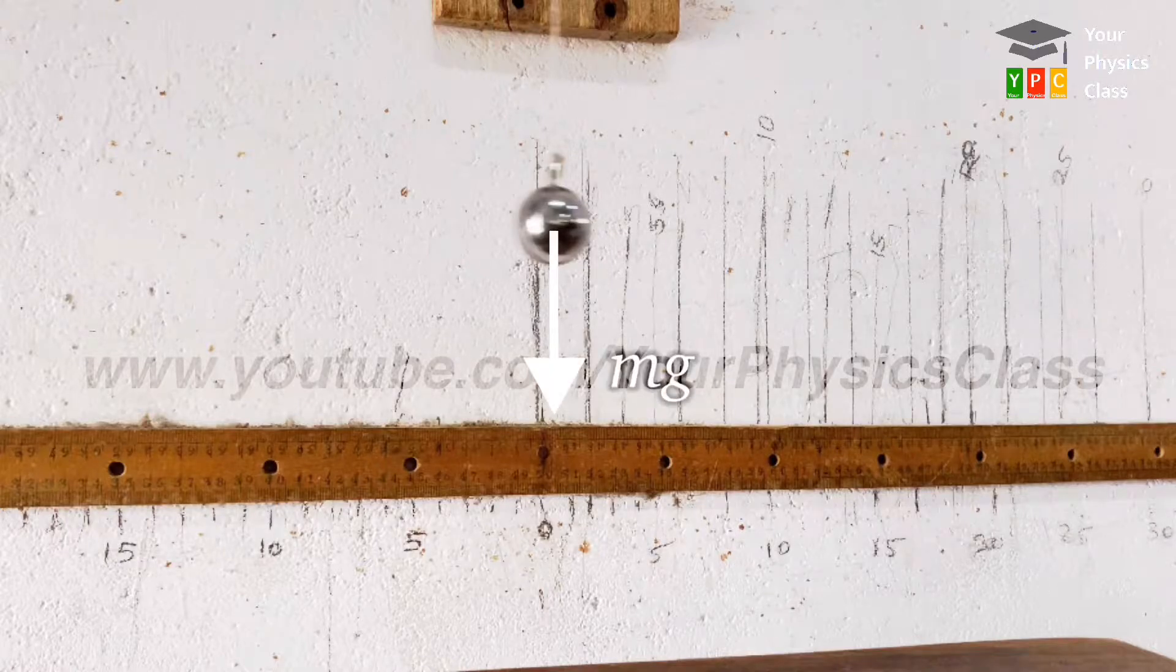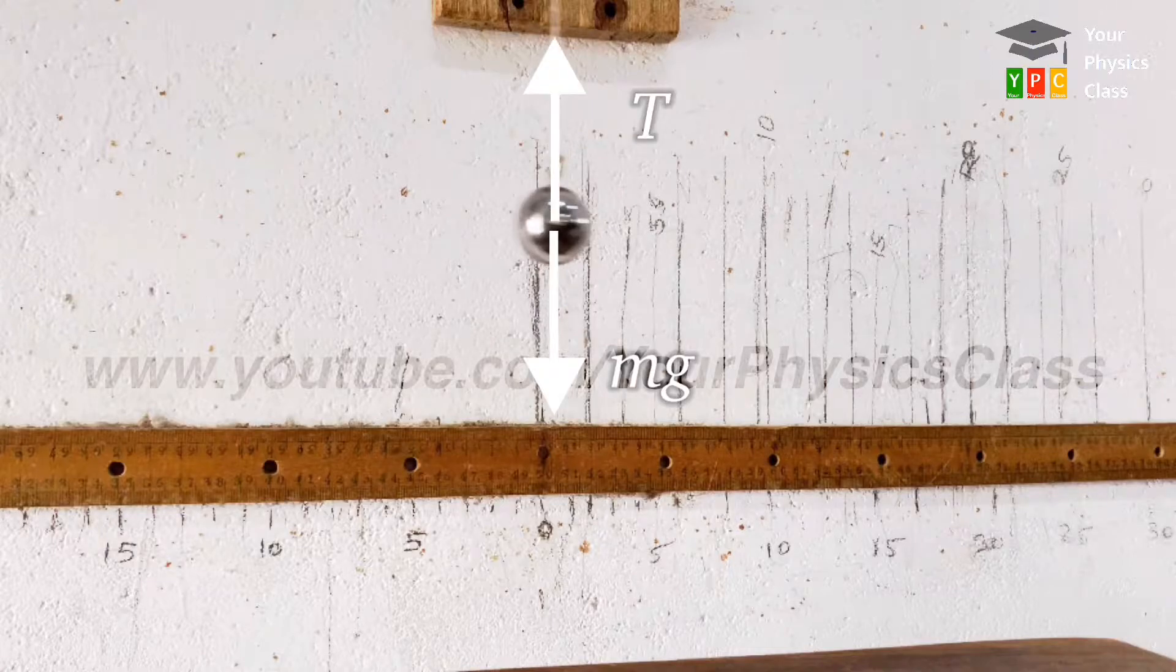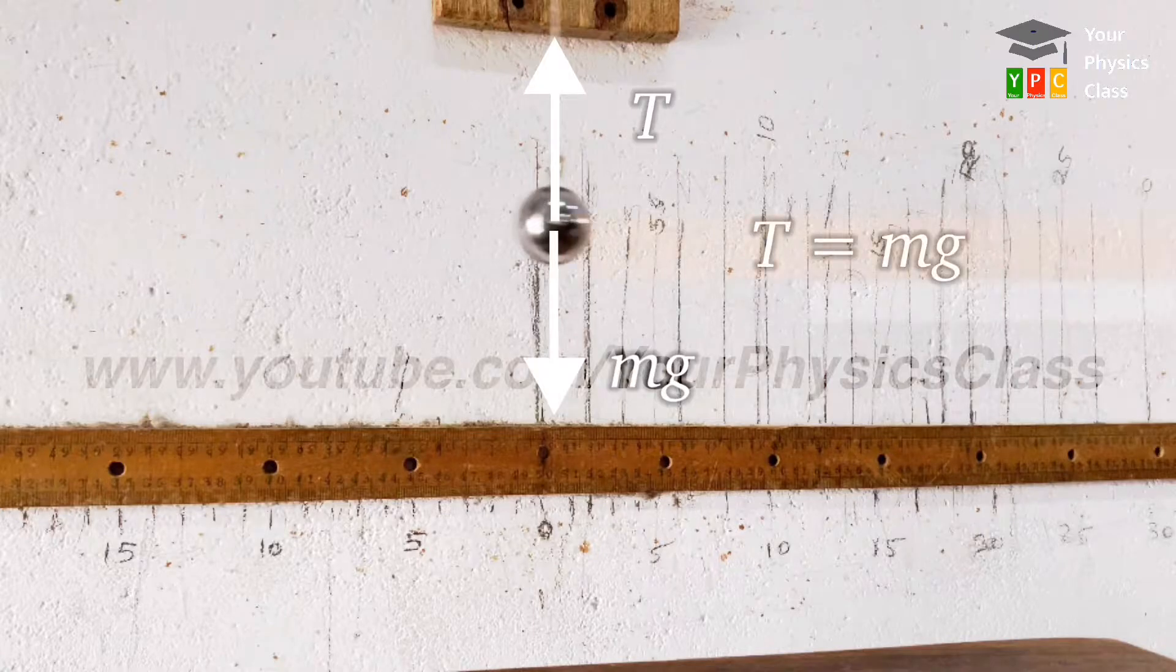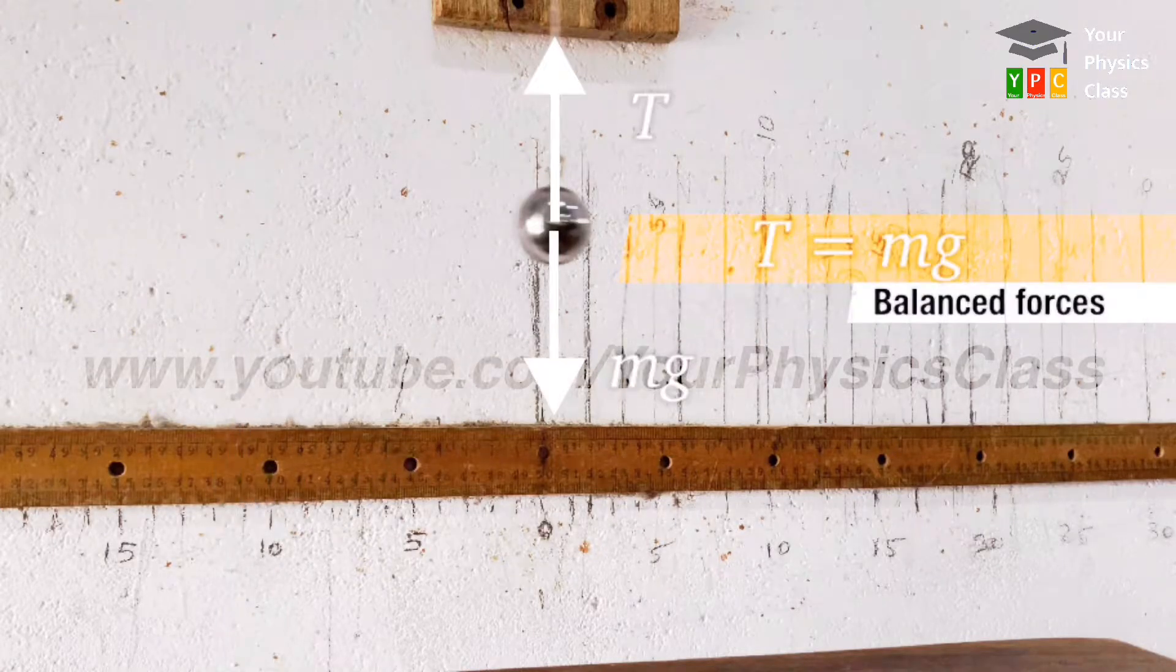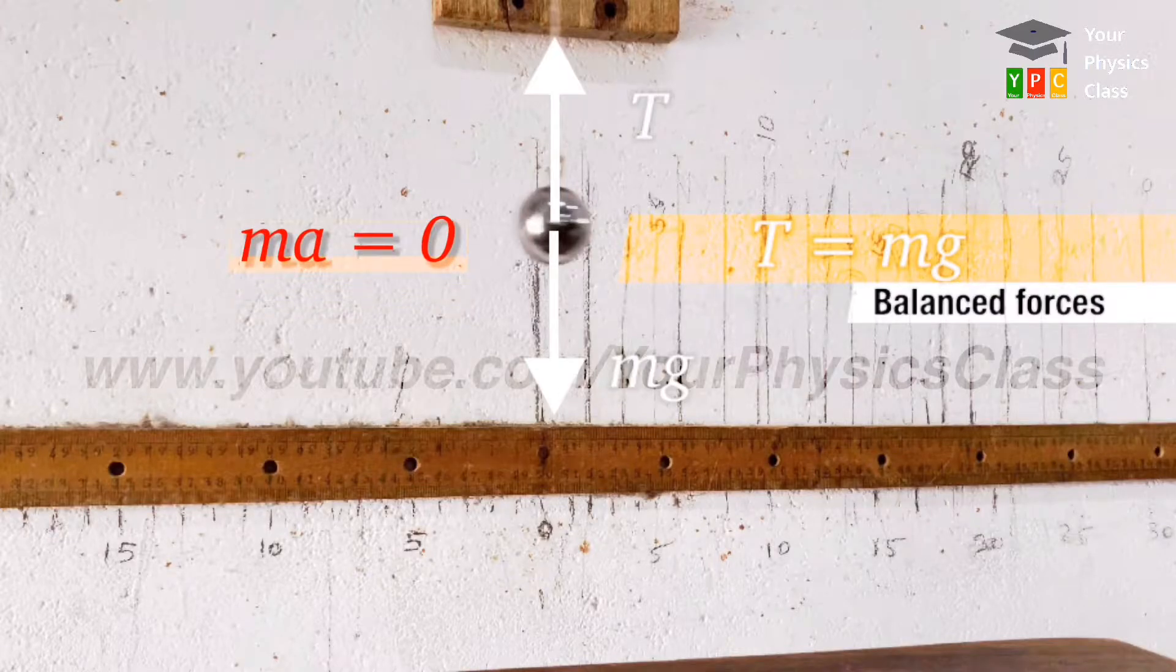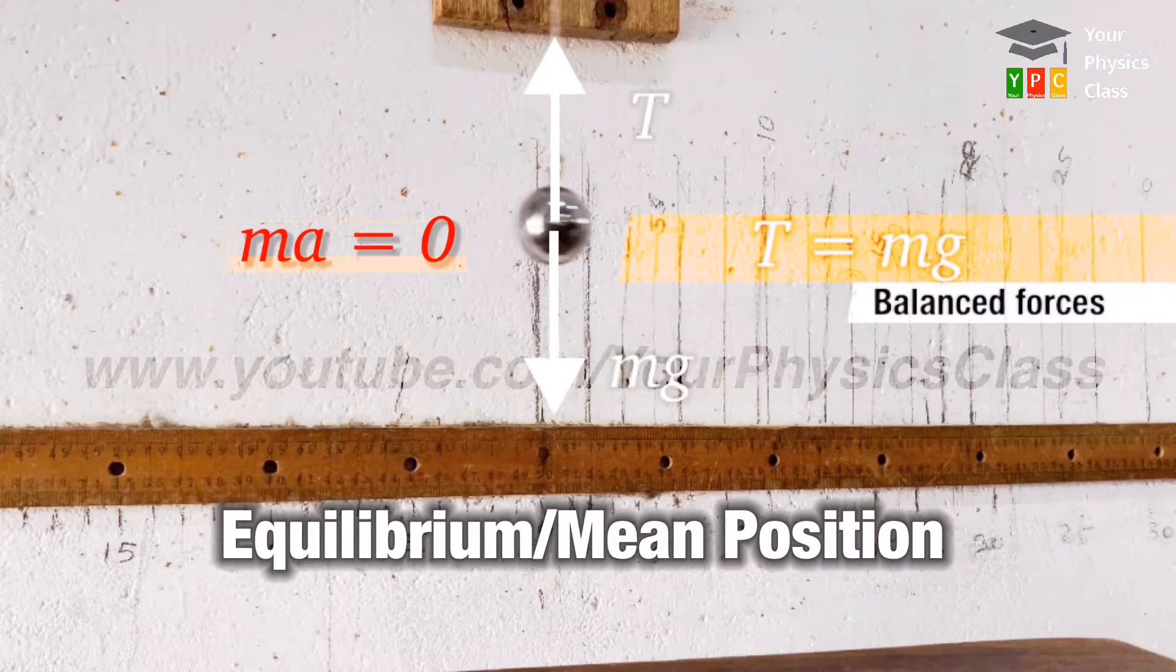Weight of the bob acts vertically downward and tension in the string acts vertically upward and that is why they balance each other and net effect on the bob becomes zero. Hence, this position is called equilibrium position or mean position.